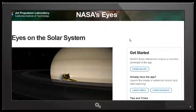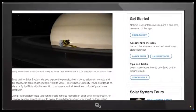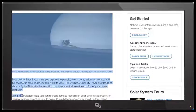So next we're going to use the NASA Eyes, Eyes on the Solar System simulator, which anyone can download free. You can download the app here. Eyes on the Solar System lets you explore the planets, their moons, asteroids, comets, and the spacecraft exploring them from 1950 to 2050. Using real trajectory data you can recreate famous moments in solar system exploration, or preview exciting adventures yet to come.